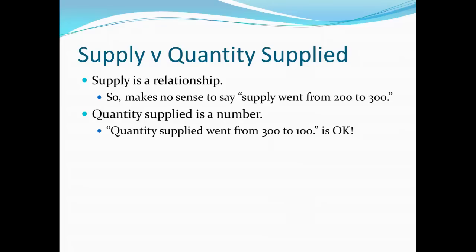This number is what we call quantity supplied. It is perfectly fine to say the quantity supplied went from $300 to $100. That's perfectly acceptable. The quantity supplied is just the amount that is made available for sale at any particular point. So quantity supplied is not a relationship. Supply is a relationship.